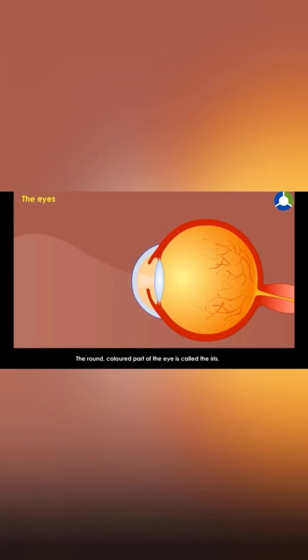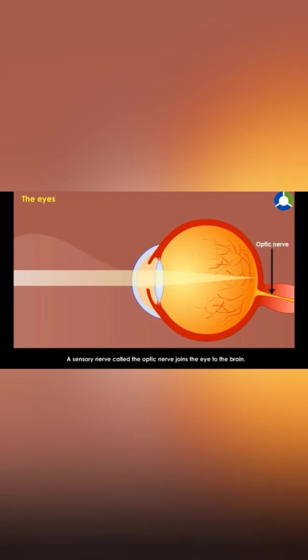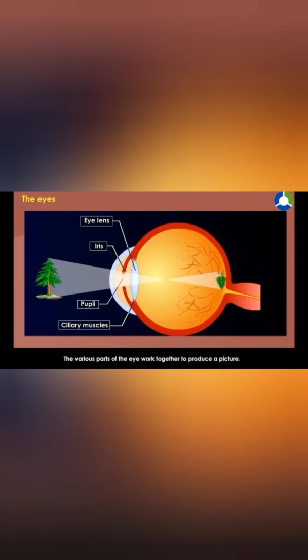The round colored part of the eye is called the iris, and the hole in the middle of the iris is called the pupil. Light enters the eye through the pupil and travels to the retina at the back of the eye. A sensory nerve called the optic nerve joins the eye to the brain. The various parts of the eye work together to produce a picture.